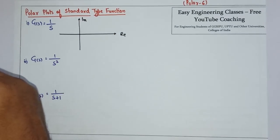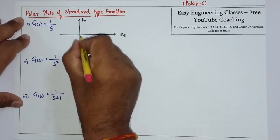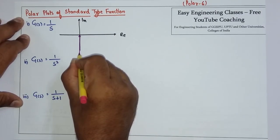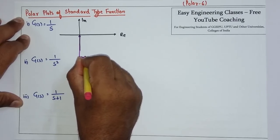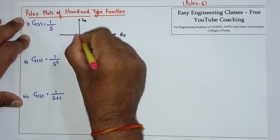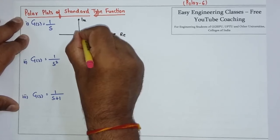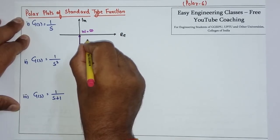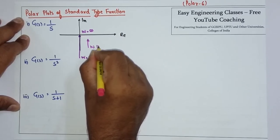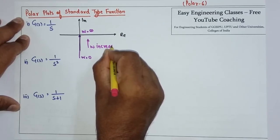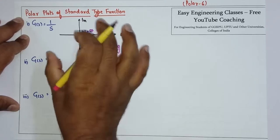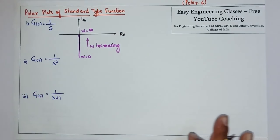This polar plot is straight from here. Omega equals 0 is infinity, and when omega approaches infinity the magnitude approaches 0. This is omega increasing, so this polar plot is a standard equation.